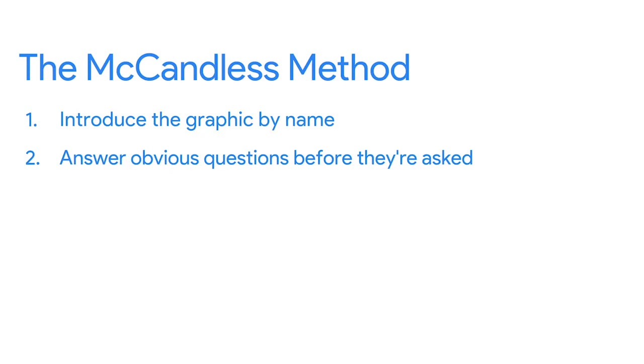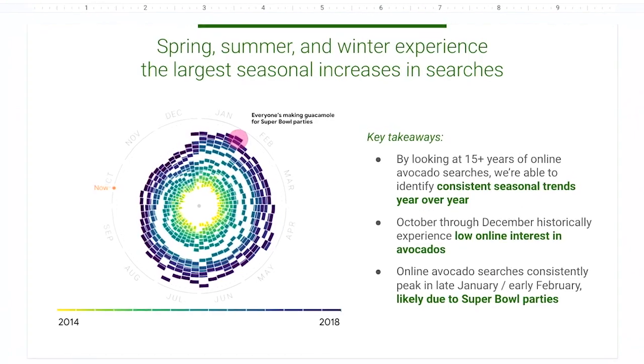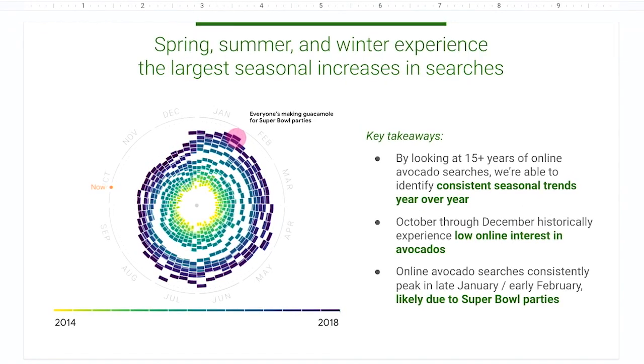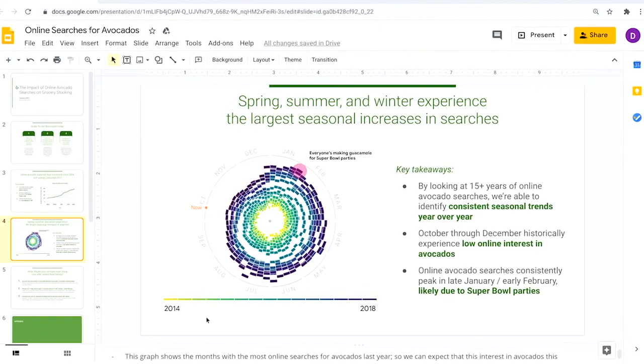Next, you'll want to answer the obvious questions your audience might have before they're asked. Start with the high-level information and work your way into the lowest level of detail that's useful to your audience. This way, your audience won't get distracted trying to understand something that could have easily been answered when the graphic was introduced. We added in the information about when, where, and how this data was gathered to frame this data viz. It also answers the first question many stakeholders will ask: where's this data from, and what does it cover? Going back to the second graph, some obvious questions our audience might have include how to read it. Knowing that, we can add an explanation to our speaker notes to answer these questions as soon as this graph is introduced: this shows time running in a circle, with winter months on top and summer on bottom. The farther elements are away from the center, the more queries happen around that time for avocado.